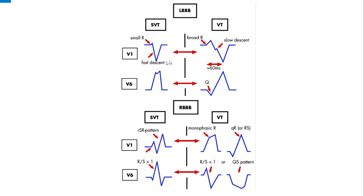For the morphological criteria, we first look at whether the ECG shows a left bundle branch block or right bundle branch block pattern. If the ECG shows left bundle branch (LBBB) morphology, then a presence of small R with deep S in lead V1, along with a prominent R in lead V6, is suggestive of supraventricular tachycardia. However, if V1 shows a broad initial small R wave with a wide terminal S wave with a notch in the center of the S wave descent — called Josephson's sign — along with a small Q and tall R in lead V6, then this is ventricular tachycardia.